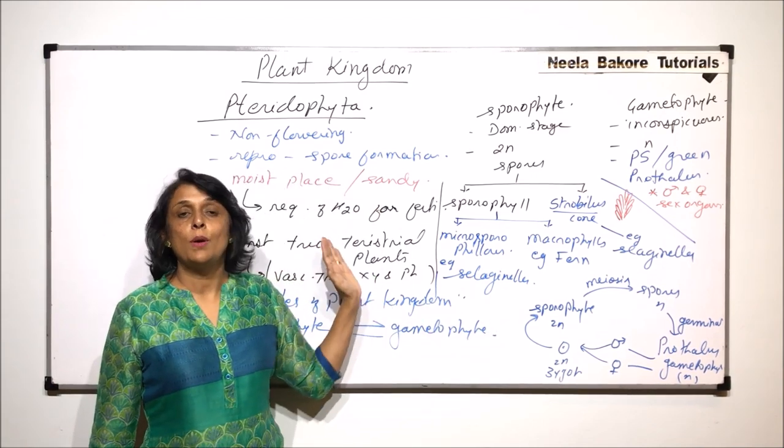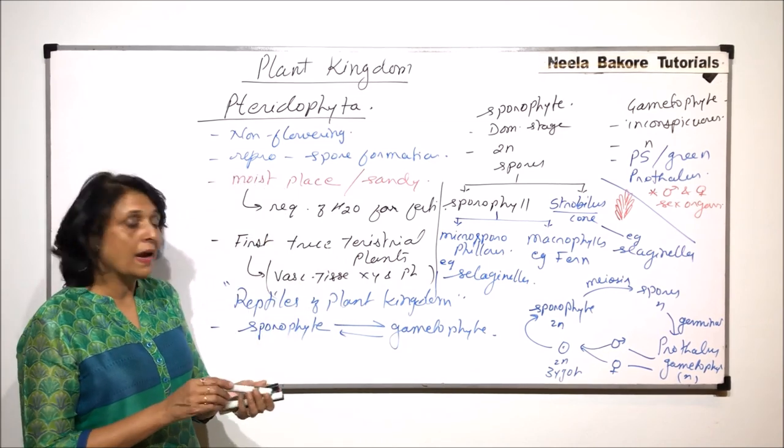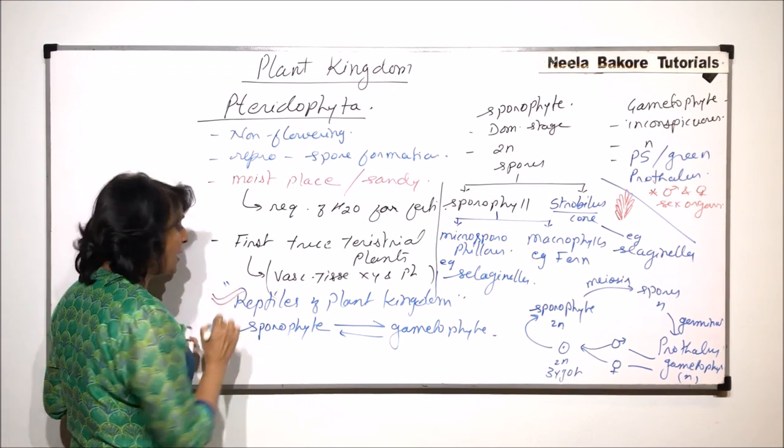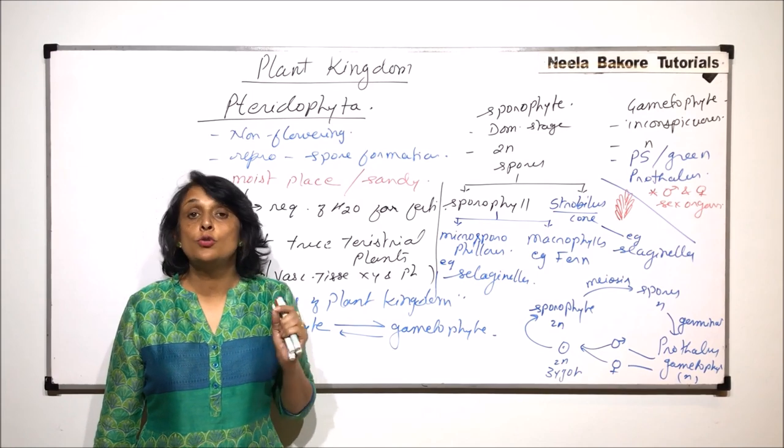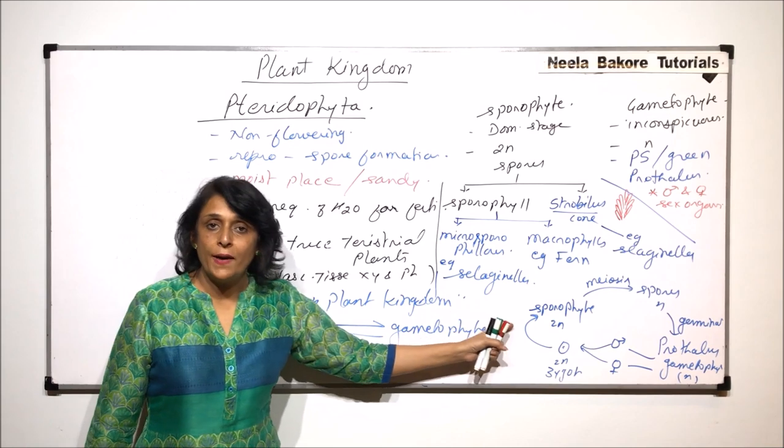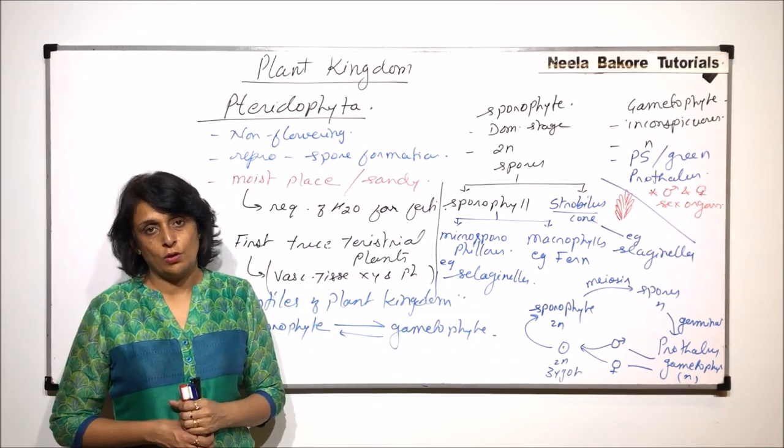And we will talk about sporophyte and gametophyte also in detail. But the thing that we have to remember is they are called the reptiles of the plant kingdom, and the reason is that they are the first true land plants. Now in the next video we will talk about the sporophyte, where exactly the spores are produced and how the structures work.